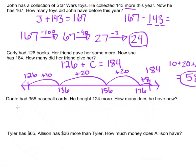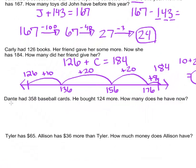Moving on to the third addition problem type, we have the problem: Dante had 358 baseball cards. He bought 124 more. How many does he have now?